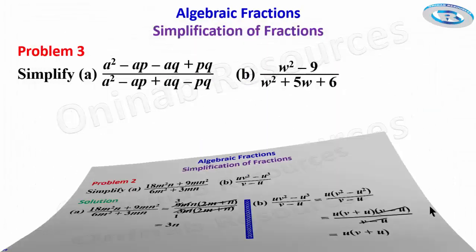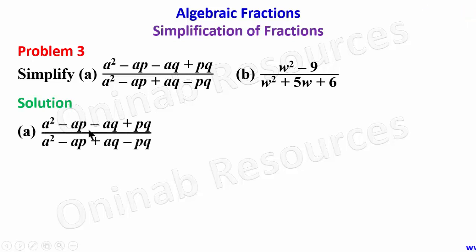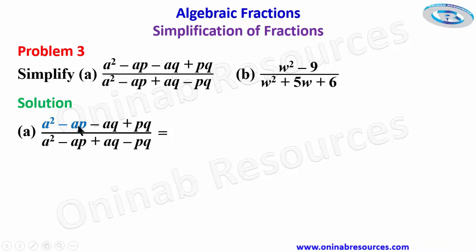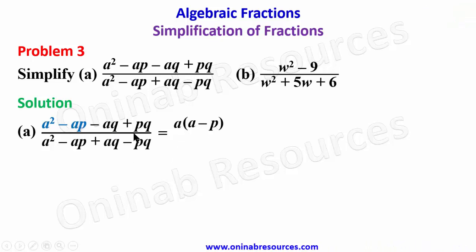We go to Problem 3, part (a). There are four terms at the numerator and four at the denominator, so we group them into pairs. Starting from the numerator, for the first two terms a² − ap: a is common, so we factor out a to get a(a − p).